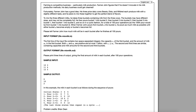He then pours bucket 1 into bucket 2, then bucket 2 into bucket 3, then bucket 3 into bucket 1, then bucket 1 into bucket 2, and so on in a cyclic fashion for a total of 100 pour operations. So the hundredth pour would be from bucket 1 into bucket 2. When Farmer John pours from bucket A into bucket B, he pours as much milk as possible until either bucket A becomes empty or bucket B becomes full. Please tell Farmer John how much milk will be in each bucket after he finishes all 100 pours.